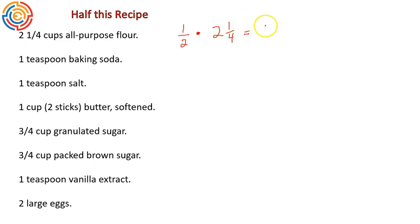Half of two is one. One and one-half times one-quarter gives us one-eighth. Multiplying our numerator times numerator, denominator times denominator. Notice I did have to multiply one-half times the whole number as well to get that answer of one and one-eighth. So if we're halving this recipe, we're going to put one and an eighth cups of flour.